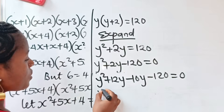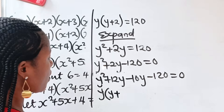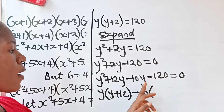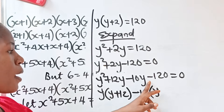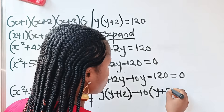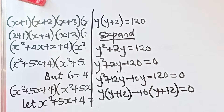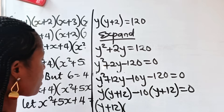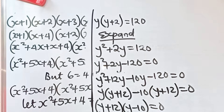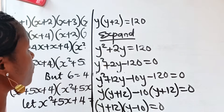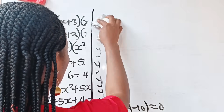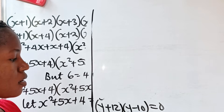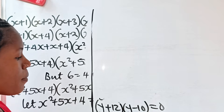Now let's factor by grouping. From the first two terms, y squared and 12y, the common factor is y, giving y times y plus 12. From the last two terms, minus 10y and minus 120, the common factor is minus 10, giving minus 10 times y plus 12. So we have y plus 12 multiplied by y minus 10 equals zero.